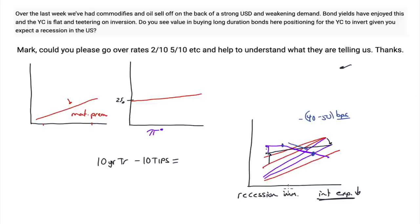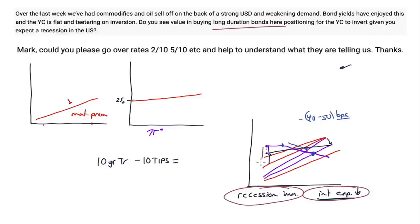So if you believe this, then yes — buying long duration bonds here, positioning for that, makes a lot of sense. If the recession happens and inflation expectations disappear quickly, the Fed will hop camps into the recession camp and begin to lower rates. When they lower rates, the short end drops and the long end drops too, and you get what's called a bull steepener — bullish because lowering rates means rising prices, going from an inverted curve to a steeper one.